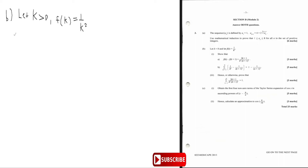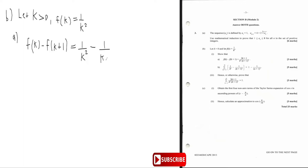So let's do that. Let's write f of k minus f of k plus one. f of k is equal to one over k squared, minus f of k plus one — you replace k with k plus one — so you get one over k plus one all squared. So you have one over k squared minus one over k plus one squared.